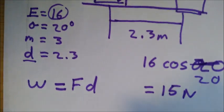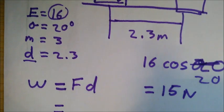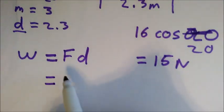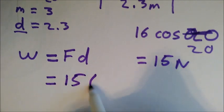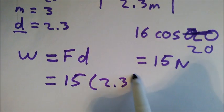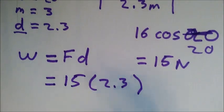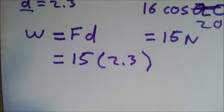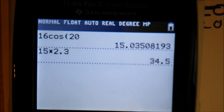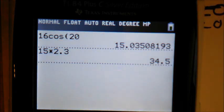And the distance we have is 2.3. So, it would be 15 times 2.3. Next, we multiply that. And we do it in the calculator, which I got here. It is 34.5.